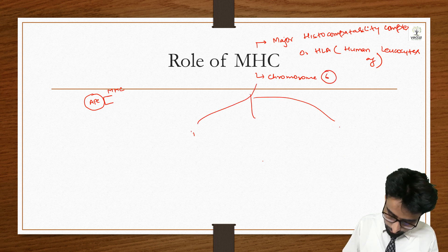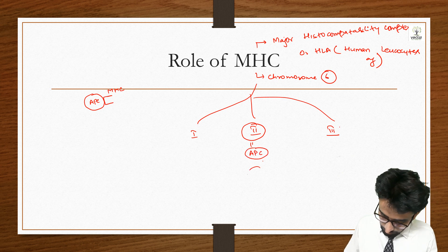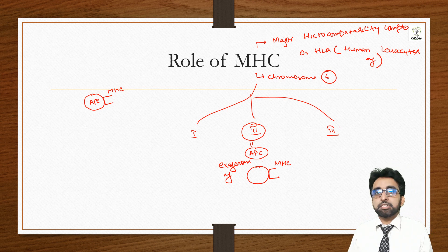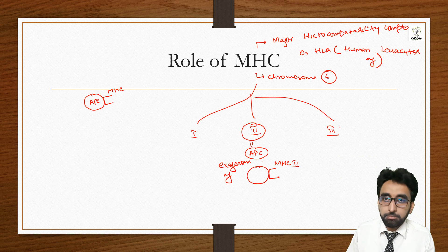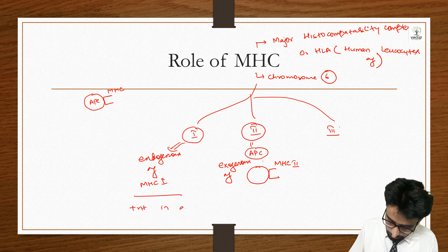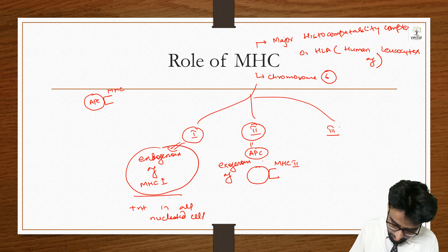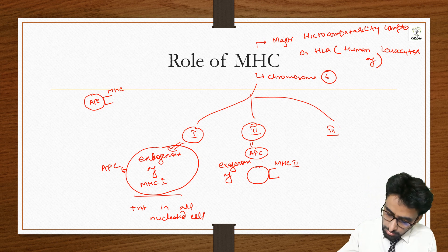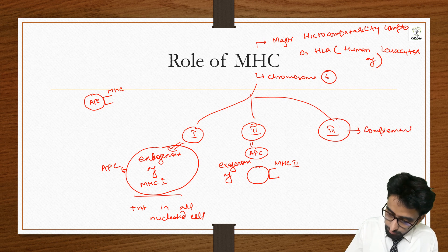There are three types of MHC. MHC Type 2 is present on APC cells — when an exogenous antigen comes in, it is exposed by the APC cells with the help of MHC 2. If the antigen is endogenous (from inside the cell), then MHC 1 is helpful. MHC 1 is present in all nucleated cells, but antigen presentation is done only by APC cells. MHC Type 3 is helpful in complement system activation.